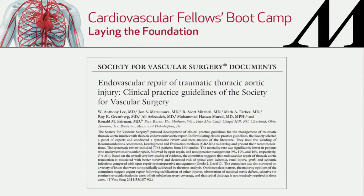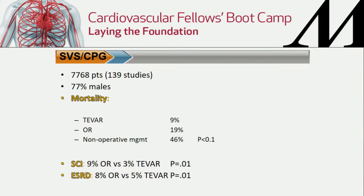The Society of Vascular Surgery has clinical practice guidelines. They reviewed 139 studies and looked at mortality. The majority of those injuries were males. For TEVAR, mortality was 9%. For open operative repair, it was 19%. Non-operative was 46% — statistically significant compared to both open and endo.